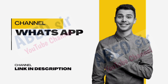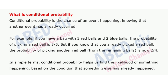Next important short question: What is conditional probability? Conditional probability is the chance of an event happening, knowing that another event has already occurred. For example, if you have a bag with three red balls and two blue balls, the probability of picking a red ball is three-fifths. But if you already picked a red ball, the probability of picking another red ball from the remaining balls is now two-fifths. Conditional probability helps us find the likelihood of something happening based on the condition that something else has already happened.